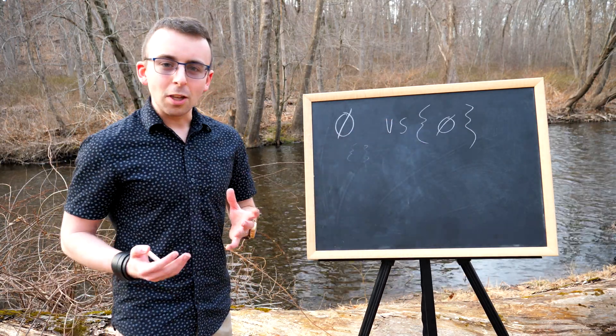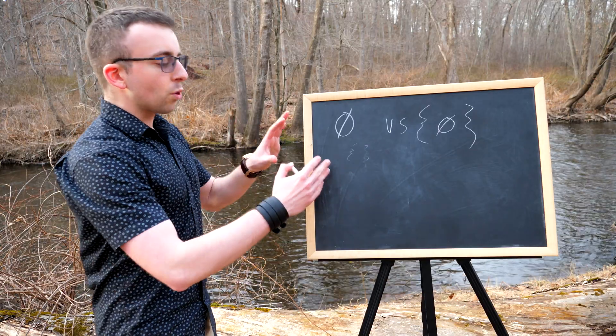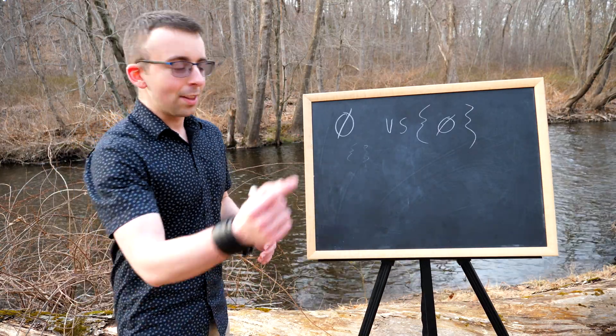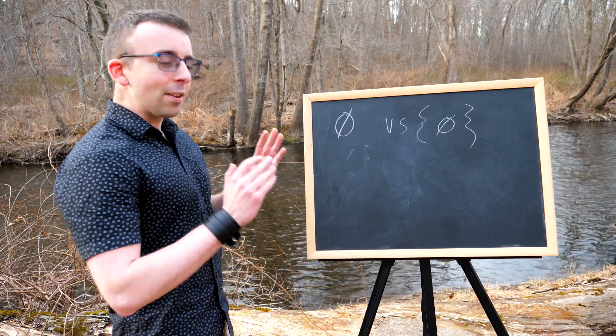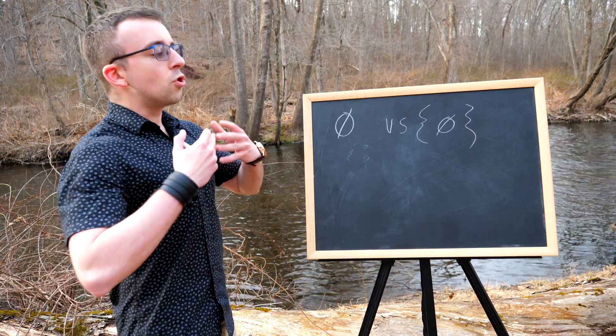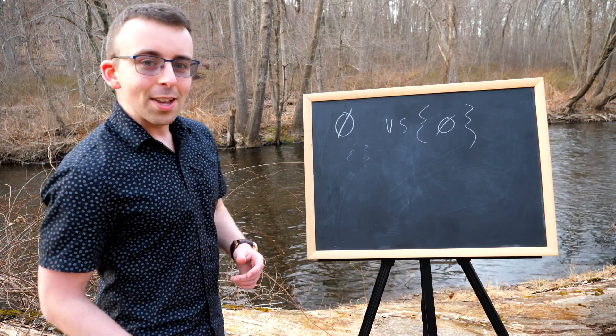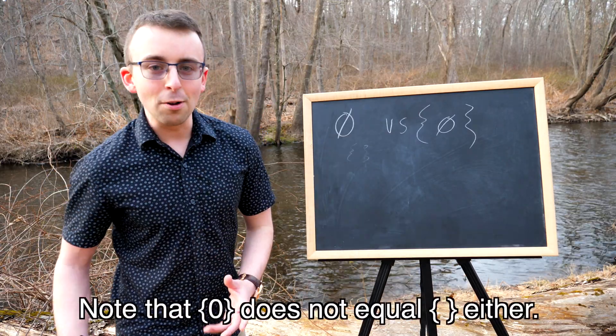I at times get a little confused about where this question is coming from, because this is a set and this is just a different set, right? So, what's the difference? I think the confusion comes from too strong of a focus on the analogy of the empty set with zero.